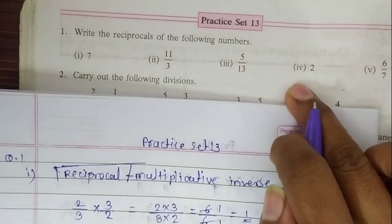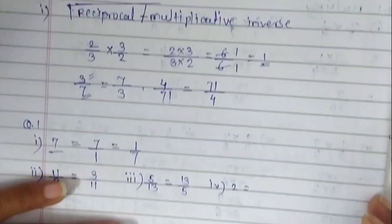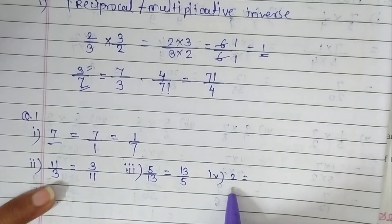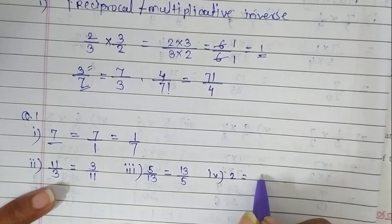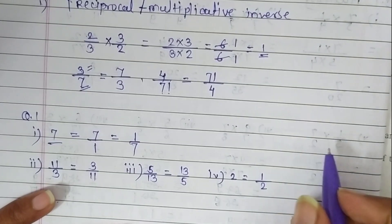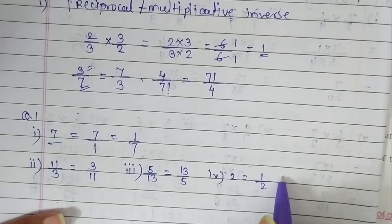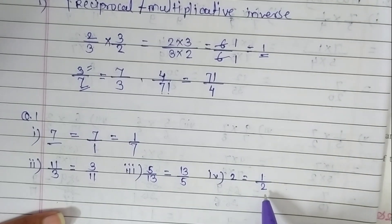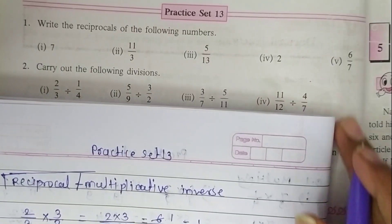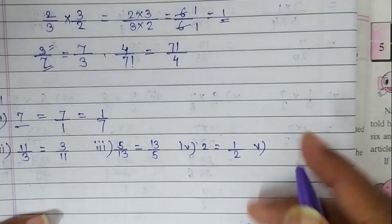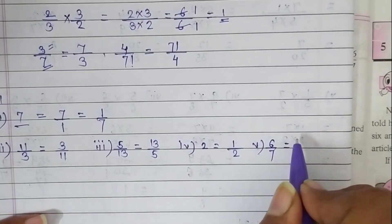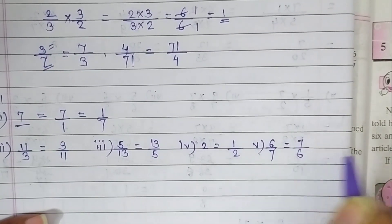The next number is 2. Here they give a whole number. How can we write the reciprocal of this number? 1 is the denominator of the given number. So just write 1 on the upper side and 2 on the downside — meaning 2 as a denominator and 1 as a numerator. So 1 upon 2 is the reciprocal of 2. The fifth question is 6 upon 7, and the reciprocal of the given fraction is 7 upon 6.